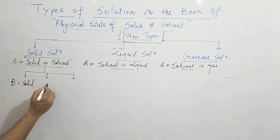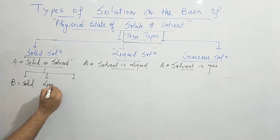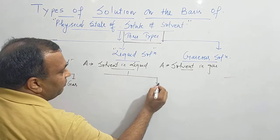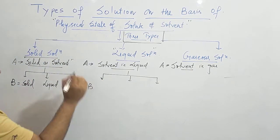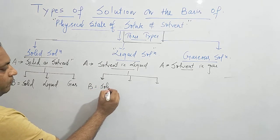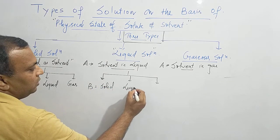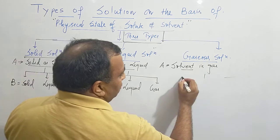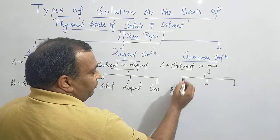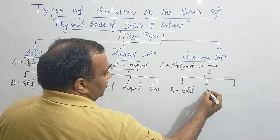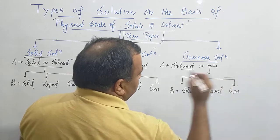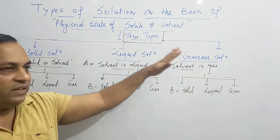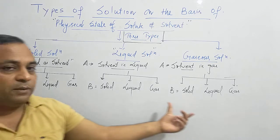In the first type, the solute — 'B' stands for solute — is a solid solute. In the second case, the solute is liquid. And in the third case, the solute is gas. Similarly, liquid solution is again divided into three parts on the basis of solute: first, solute is solid; second, solute is liquid; third, solute is gas. And gaseous solutions are also again of three types: solute is solid, solute is liquid, and solute is gas.